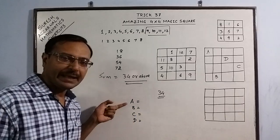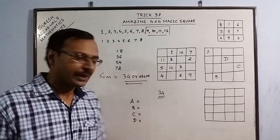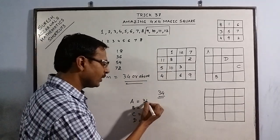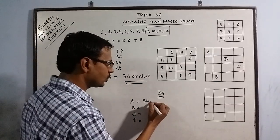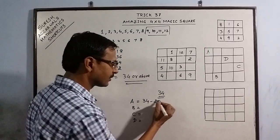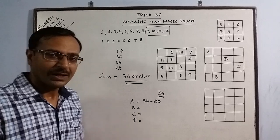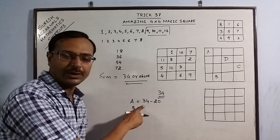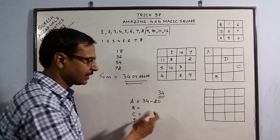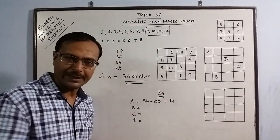Now, for filling up cell A, what you do? Whatever sum you have to do, whatever sum you are being given, just subtract 20 from this. You have to always subtract 20 from the sum you are required to get. So, you get 14. So, A becomes 14.